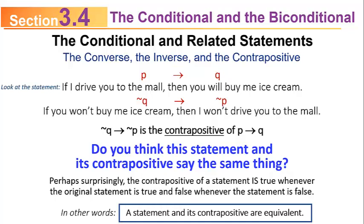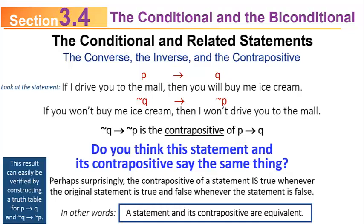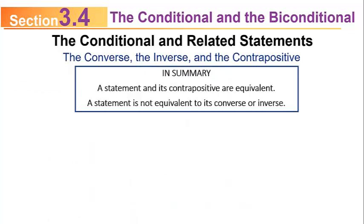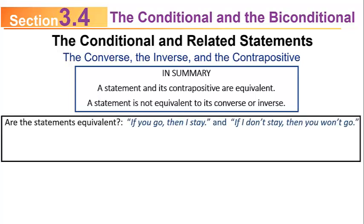A statement and its contrapositive are equivalent, and we'll use this result in later problems. You can verify this yourself: build the truth table for P implies Q, then build the truth table for the contrapositive, not Q implies not P, and you'll see that the truth values are exactly the same. In summary, a statement is equivalent to its contrapositive, but not equivalent to its converse or inverse.